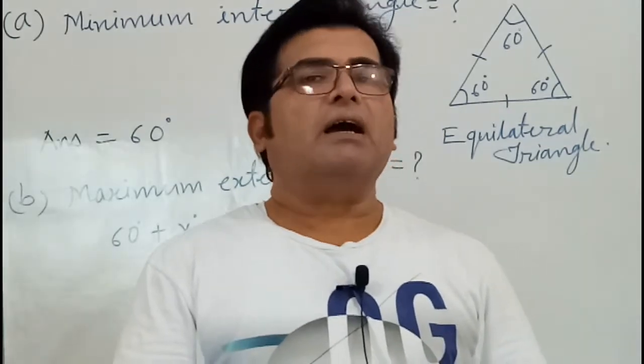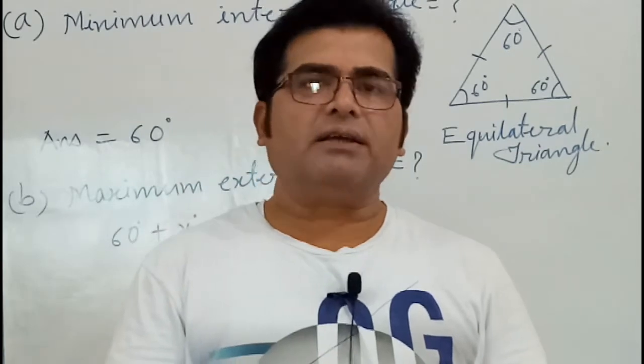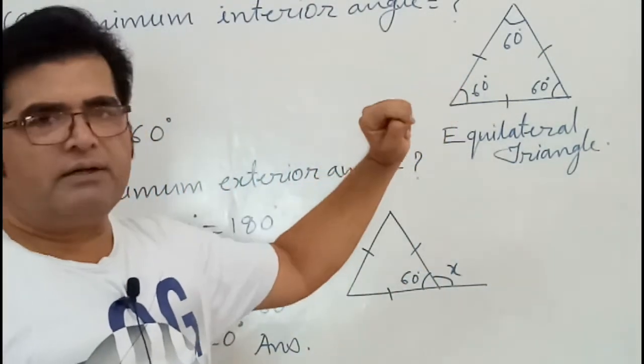Below 60 degrees, an interior angle is not possible in a regular polygon. Here I have drawn an equilateral triangle. It has three equal sides.